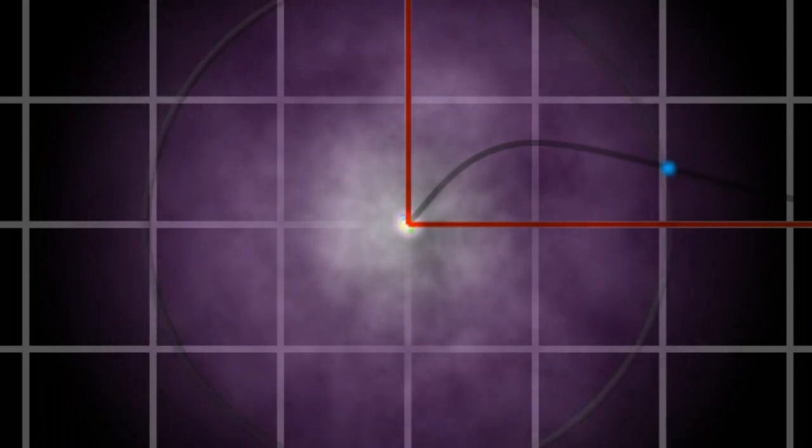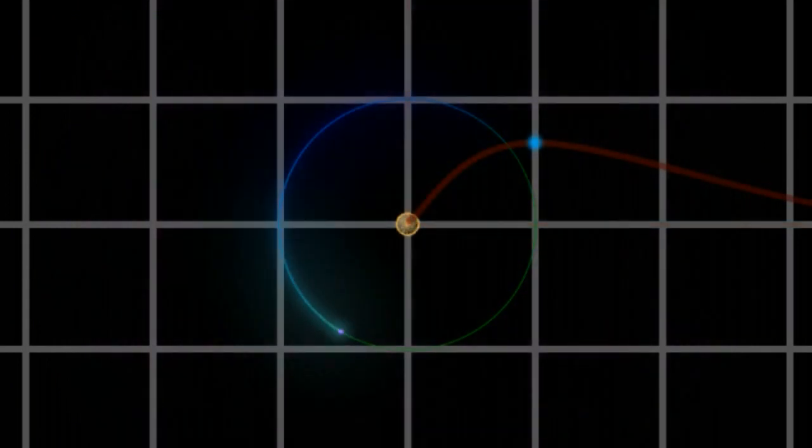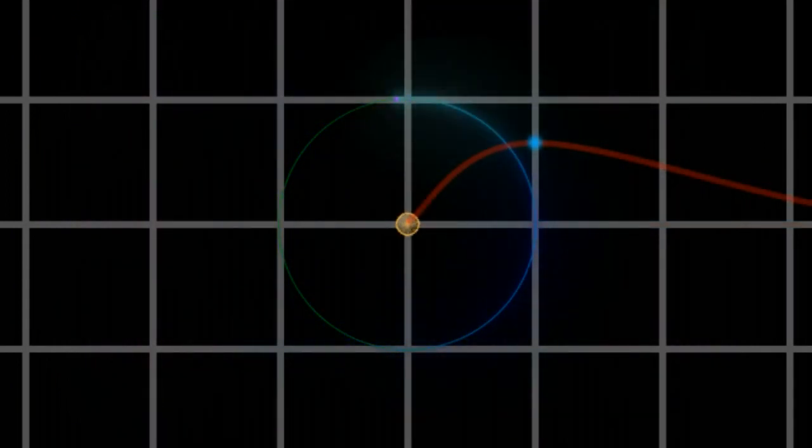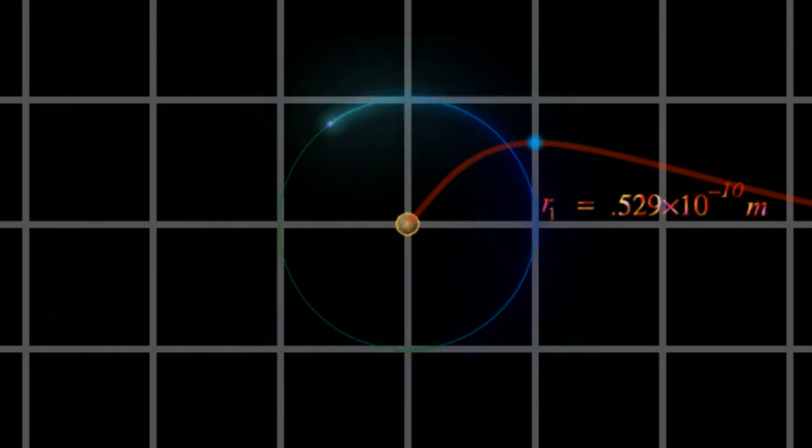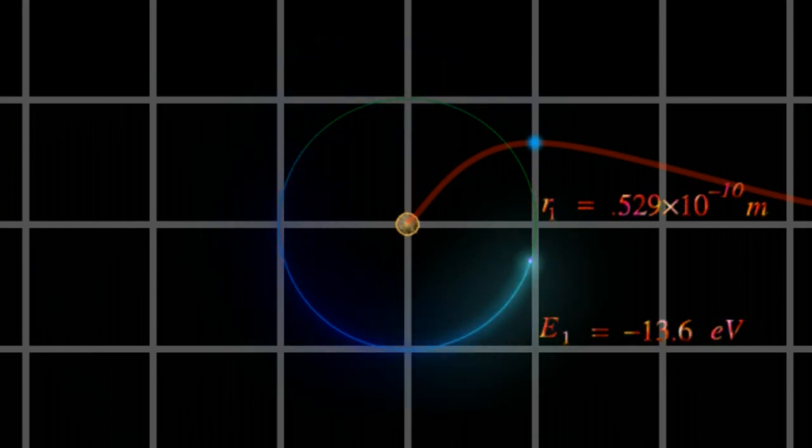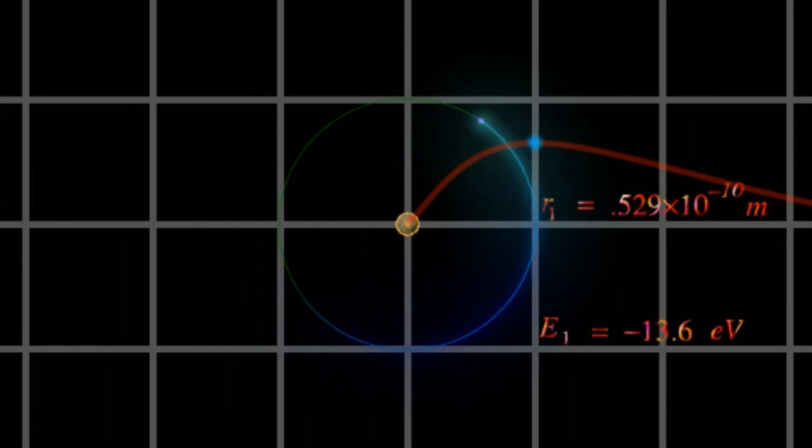Amazingly, the radius where the probability reaches a maximum is precisely equal to the radius of the first allowed orbit of Niels Bohr's model of the hydrogen atom. And its energy is exactly equal to the energy of an electron in this orbit, in the Bohr atom.